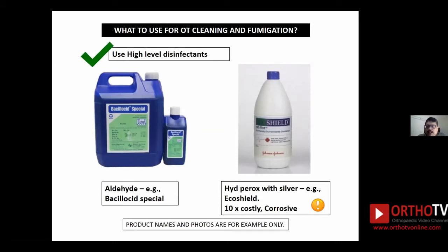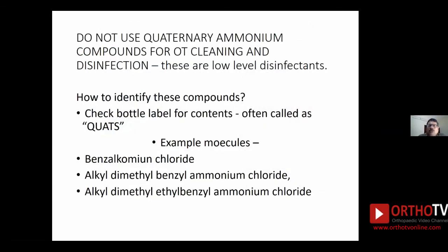Two chemicals commonly available in India are aldehyde-based products — for example Baclossate — and hydrogen peroxide with silver ions — for example Eco-Shield. These are high-level disinfectants that kill all vegetative bacteria up to Mycobacterium tuberculosis and a good amount of spores, which is the level required for the OT. The bactericidal efficacy of both is equal; however, hydrogen peroxide works out costlier than aldehydes, and it can be corrosive, especially if the steel quality in the OT is poor.